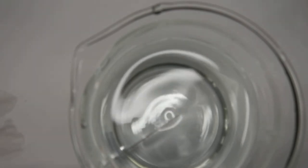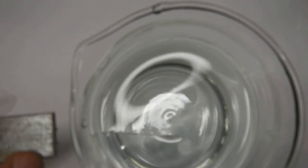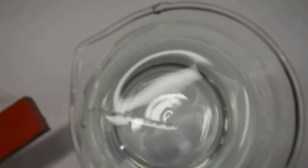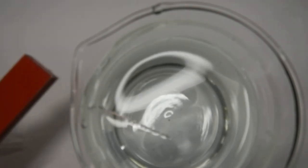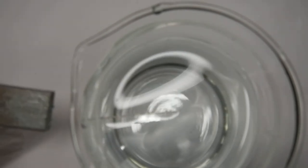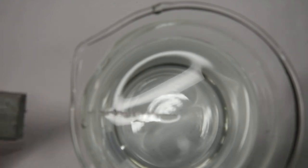So the pointy end of the needle is pointing towards the silver, and the eye of the needle is pointing towards the red end. So that should give you enough information to answer some questions. I'm not doing the other magnetic demonstration, so you'll have to use this one.